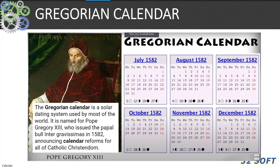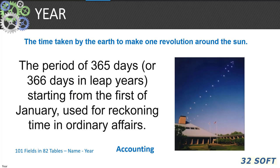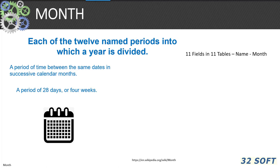The Gregorian calendar is a solar dating system used by most of the world today. It is named for Pope Gregory VIII, who issued a papal bull in 1582 announcing calendar reforms for all of Catholic Christendom. The year is the orbital period of a planetary body — 365 days, or 366 in leap years, starting from January 1st. A month is each of the 12 named periods in which a year is divided, or a period of 28 days or 4 weeks.